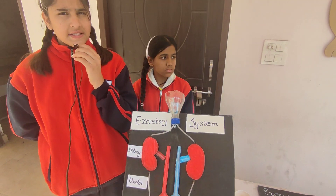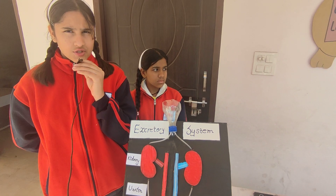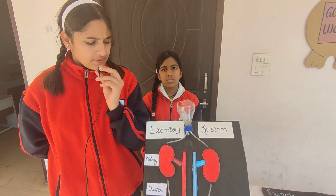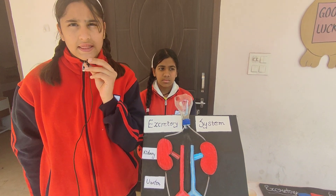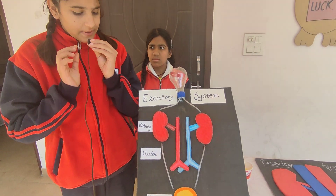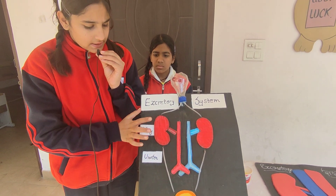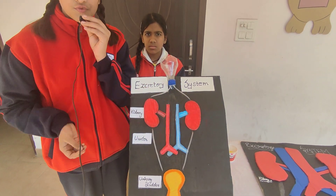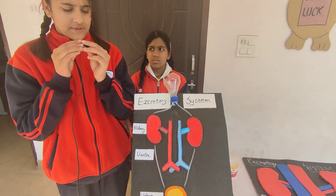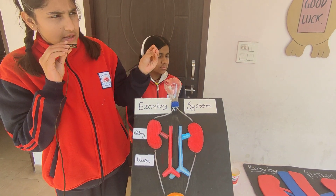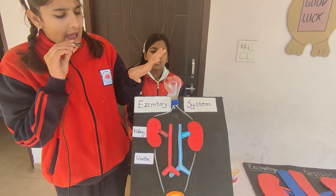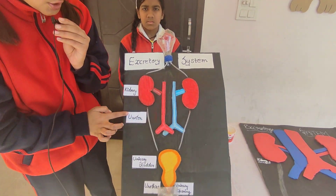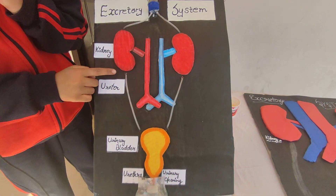The waste present in our body has to be removed. It is removed by the blood capillaries in the kidneys. When blood reaches the kidney, it contains both useful and harmful substances. Useful substances are absorbed and the harmful substances are passed through a tube-like structure called the ureter.